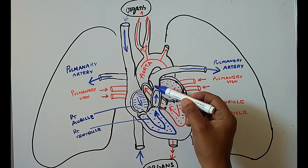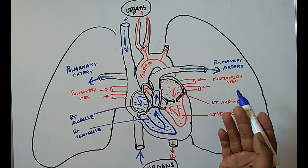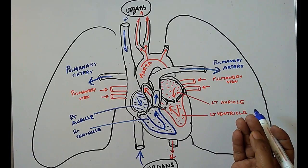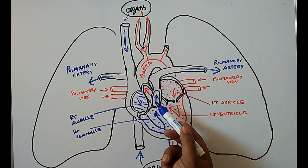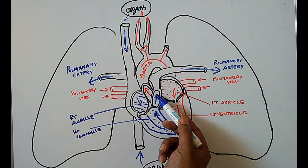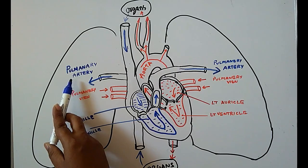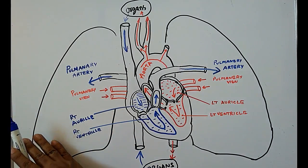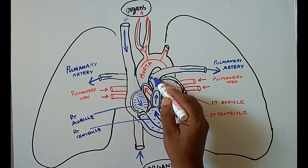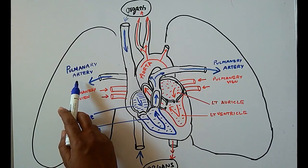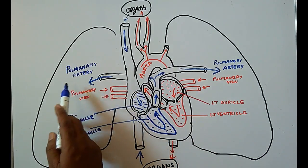From the right ventricle, blood enters into the pulmonary artery through the pulmonary valve. Arteries are blood vessels which carry blood from the heart to body parts. This pulmonary artery carries impure blood from the heart to the lungs. 'Pulm-' relates to the lungs — pulmonology is the study of lungs.